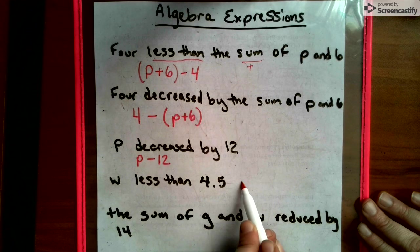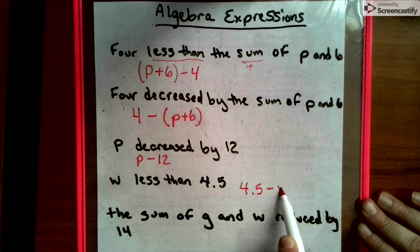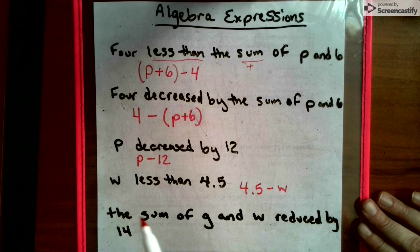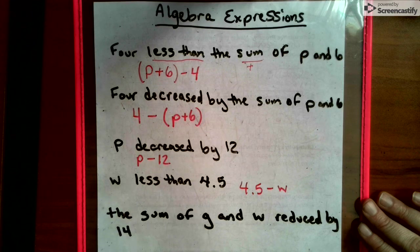W less than 4 and a half. So we have to have the 4 and a half before we can say W less than it. We don't know what W is, but we're taking it from this. So 4.5, 4 and a half, has to come first before the W.